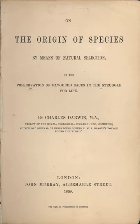Darwin suggests that sexual selection might explain seemingly trivial traits, and mentions the differences between the races of man, noting that some light can apparently be thrown on the origin of these differences, chiefly through sexual selection of a particular kind. Chapter 7 of the first edition addresses the evolution of instincts, with examples including slave-making ants and the construction of hexagonal cells by honey bees. Darwin noted that some species of slave-making ants were more dependent on slaves than others, and he observed that many ant species will collect and store the pupae of other species as food. He suggested that bees that make hexagonal cells evolved in steps from bees that made round cells, under pressure from natural selection to economize wax.